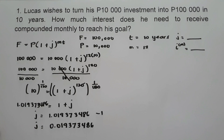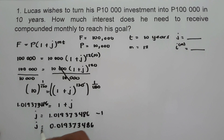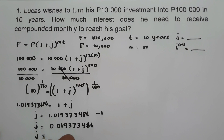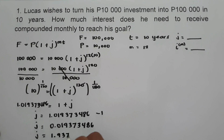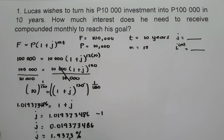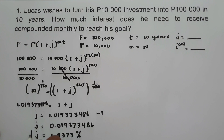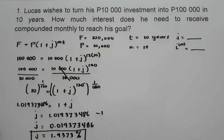We are going to write our answer in percentage by moving two decimal places to the right. So J equals 1.9373%, keeping four decimal places. This is the value of J.